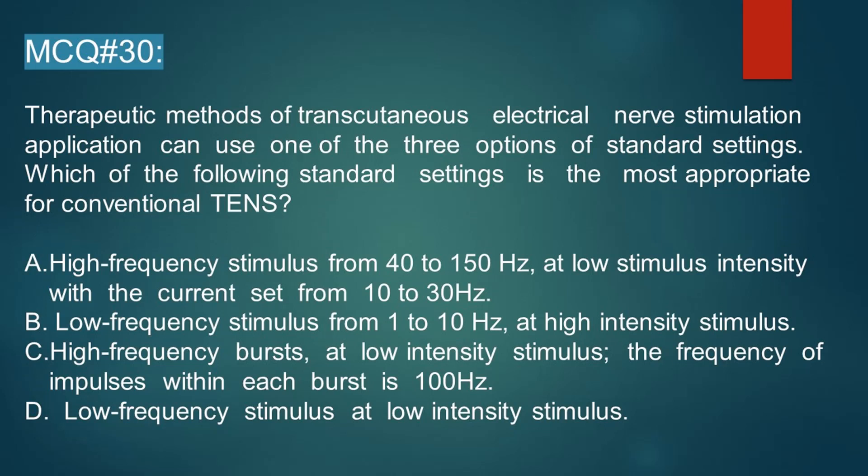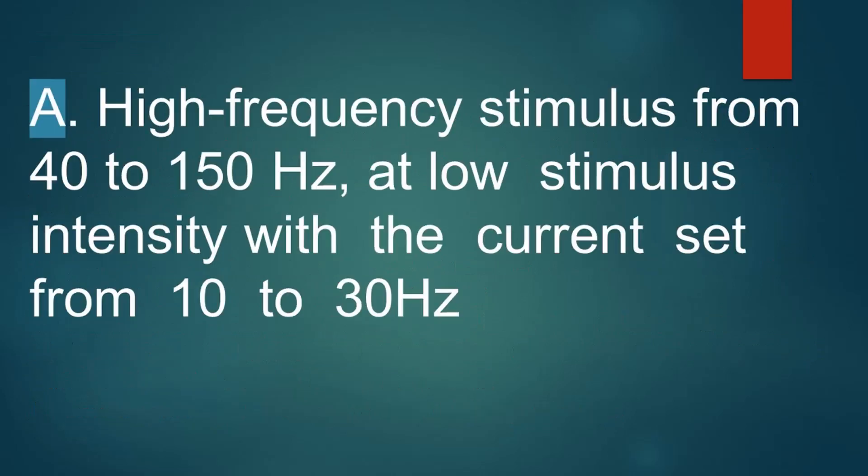Option B: low frequency stimulation from 1 to 10 Hz at high intensity stimulus. Option C: high frequency bursts at low intensity stimulus, with the frequency of impulses within each burst at 100 Hz. Option D: low frequency stimulus at low intensity stimulus. The correct answer is Option A: high frequency stimulus from 40 to 150 Hz at low stimulus intensity, with the current set from 10 to 30 Hz.